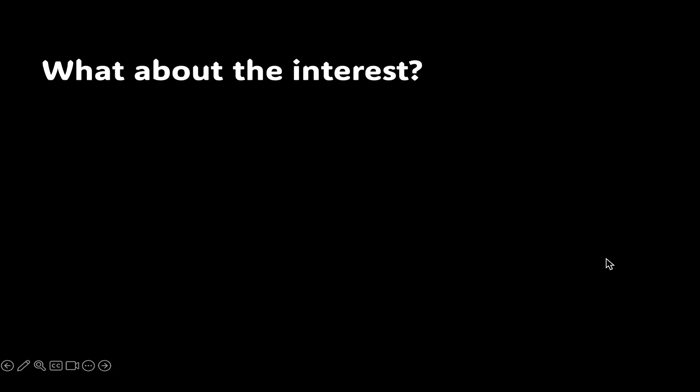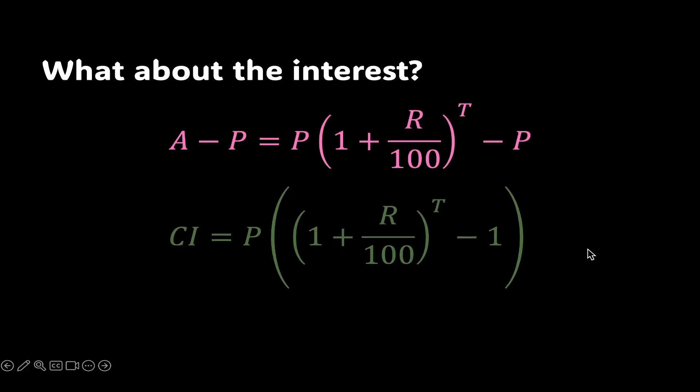I know what you're thinking, but what about the interest after T years? So for that, all we need to do is subtract the original amount P from the amount A and hence, we get P times 1 plus R over 100 to the power of T which was nothing but the amount after T years minus P. You can take P as common if you want and we are done.